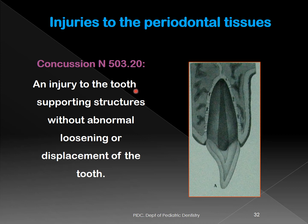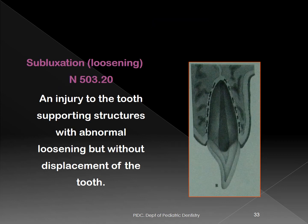Concussion means the tooth has been violently shaken within its alveolar socket, but there is no looseness or displacement — the tooth is essentially stunned. Subluxation is an injury to the tooth and supporting structures with abnormal loosening but without displacement. The tooth has grade one or grade two mobility.